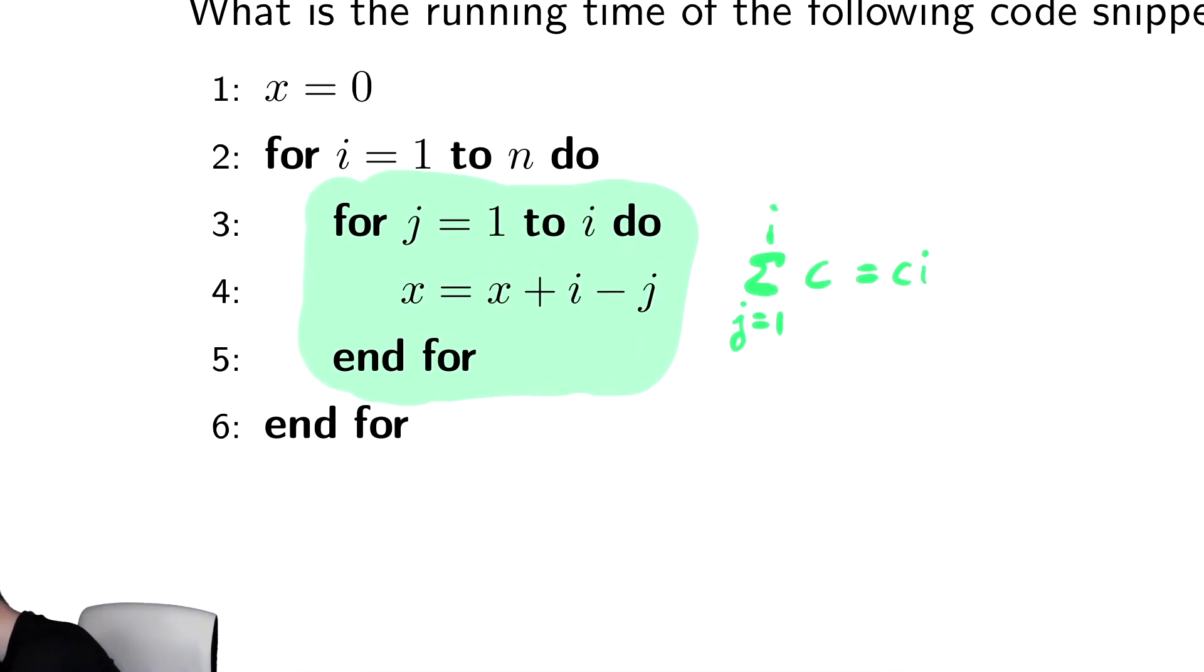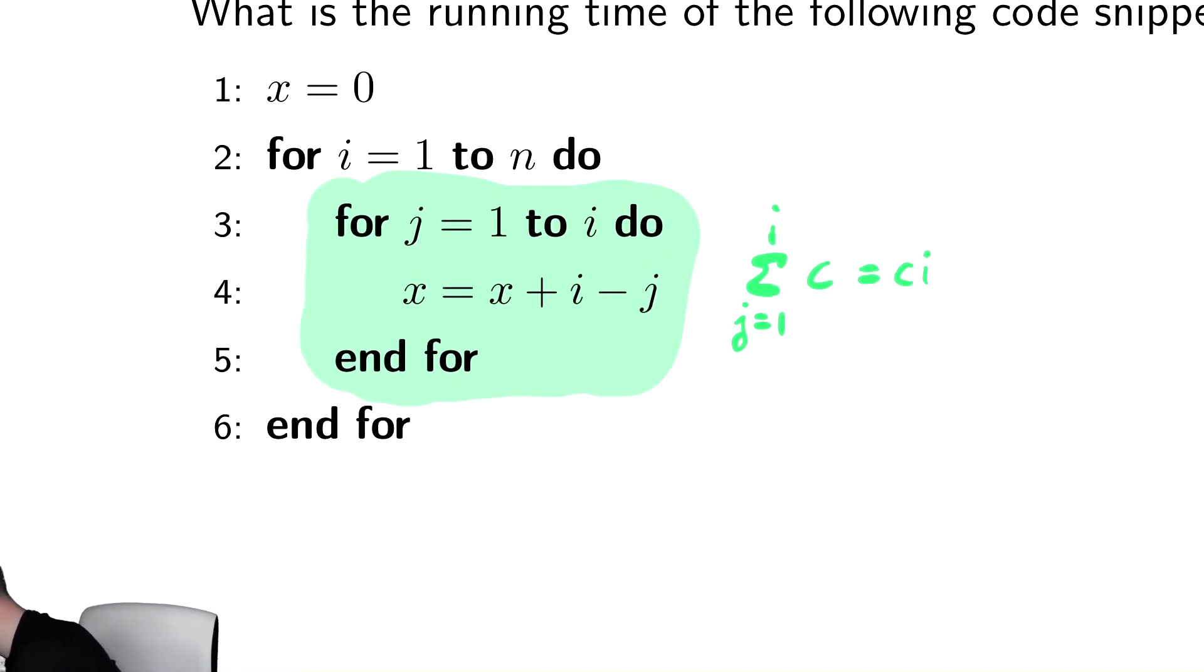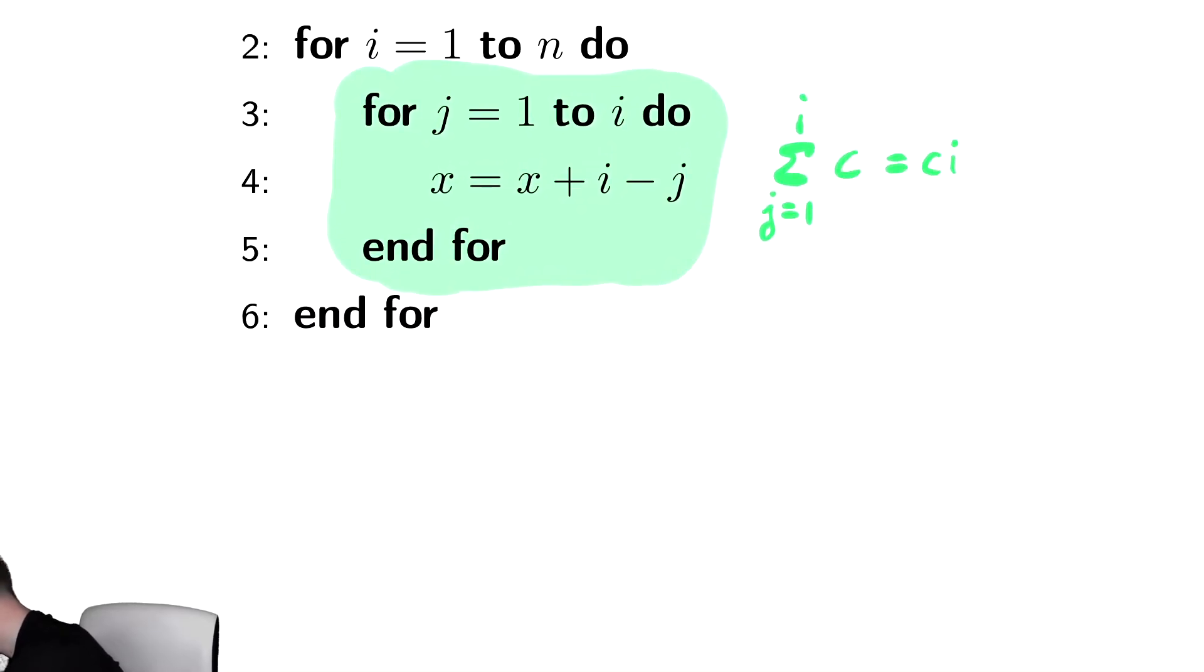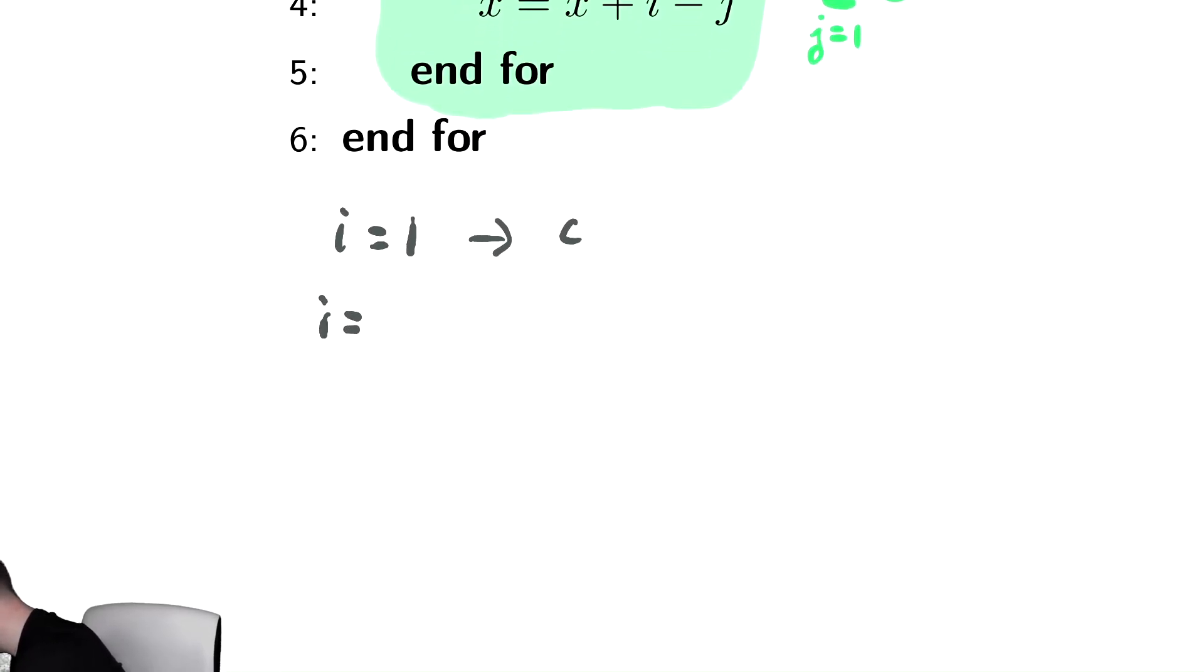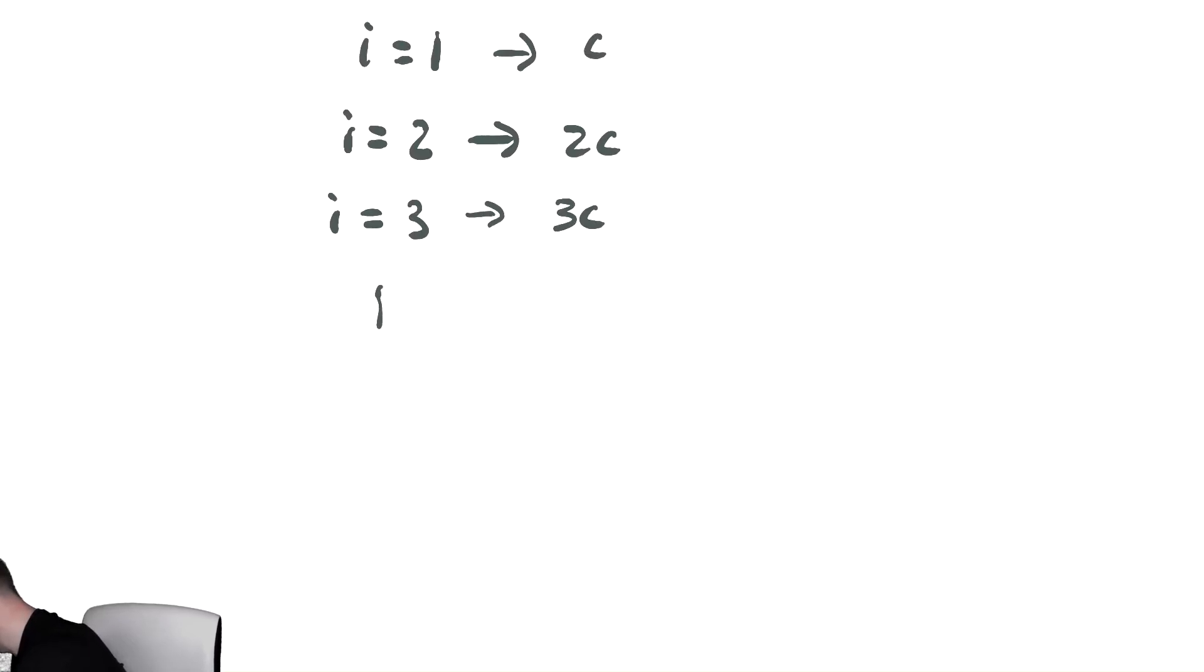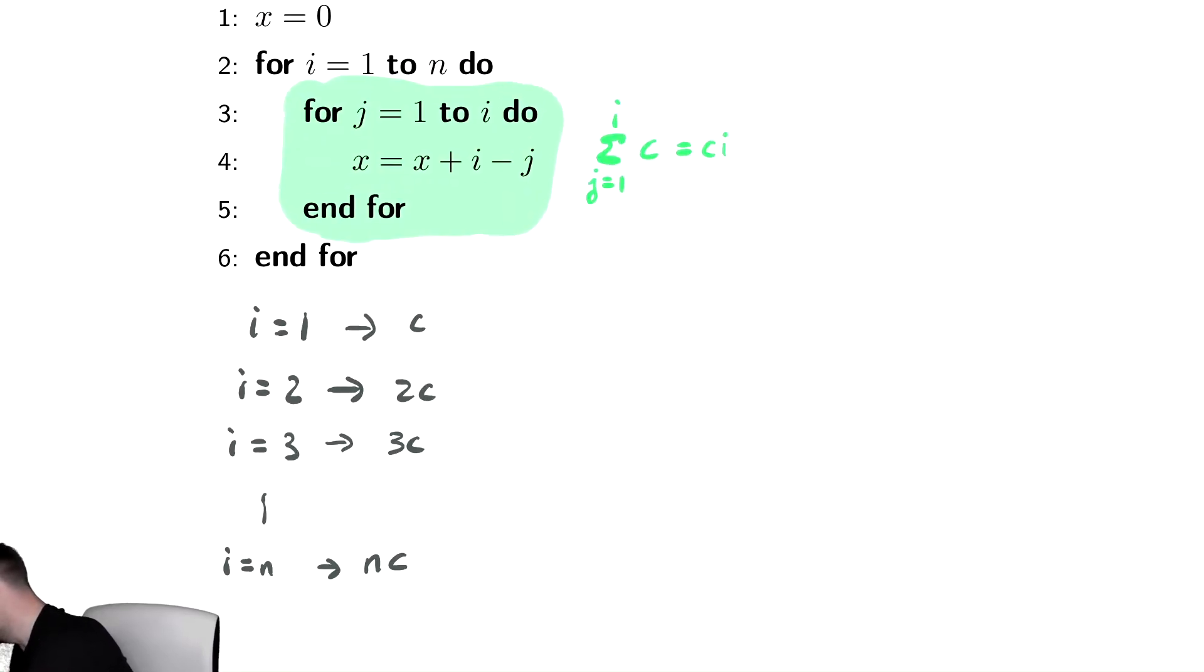Now we know that each run of this outer for loop takes C I time. So let's create that little table that we had before. When I equals one, it's going to take C time. And then when I equals two, it's going to take two C time. When I equals three, it's going to take three C time. When I equals N, it's going to take N times C time. That's what we have. We know it takes C I time. And we know the values of I goes one, two, three, four, up until N.